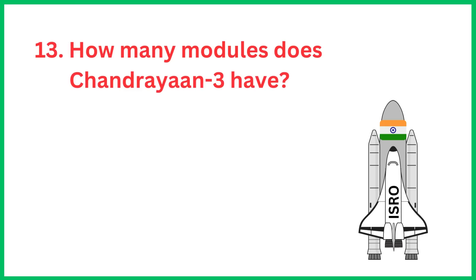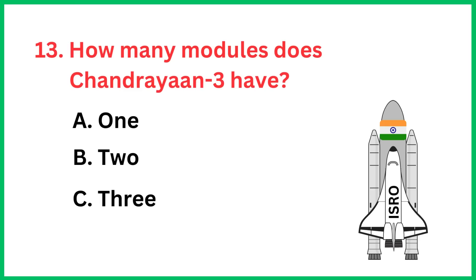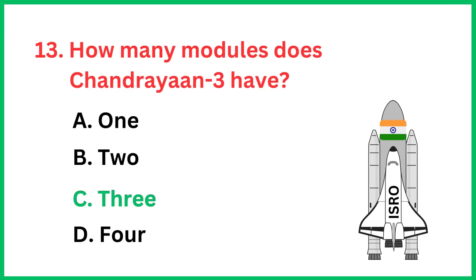How many modules does Chandrayaan-3 have? The correct answer is option C, 3.